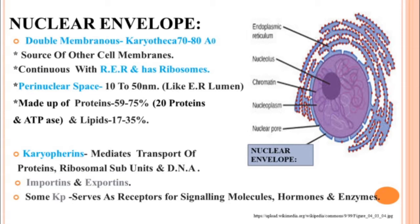The lipid content varies from 17 to 35 percent. The proteins present on the nuclear envelope are named karyopherins. They mediate transport of proteins, ribosomal subunits, and DNA. Those which import into the nucleus are called importins and those which export from the nucleus are called exportins. Some karyopherins serve as receptors for signaling molecules, hormones, and enzymes. You can see in the diagram how the nuclear envelope shows continuity with the endoplasmic reticulum, surrounding the karyoplasm.